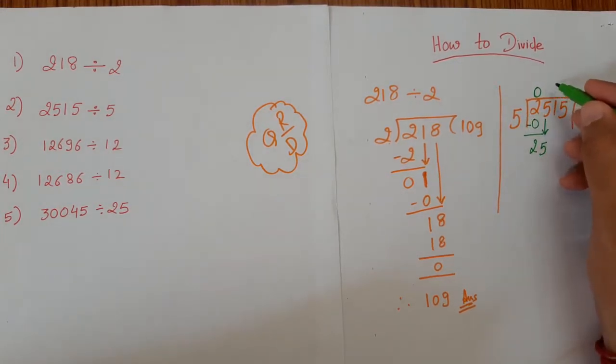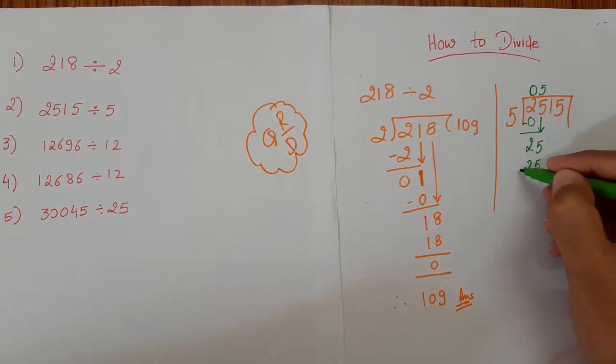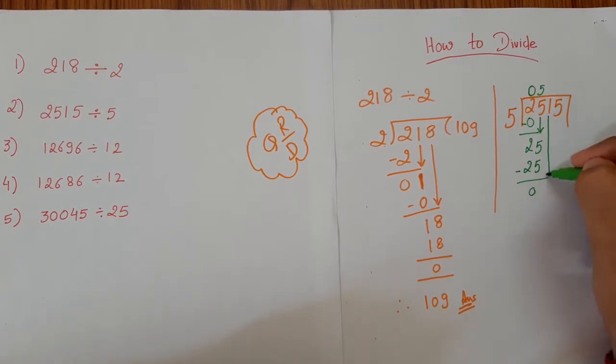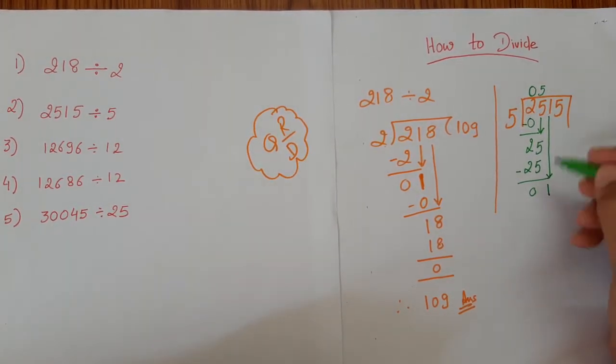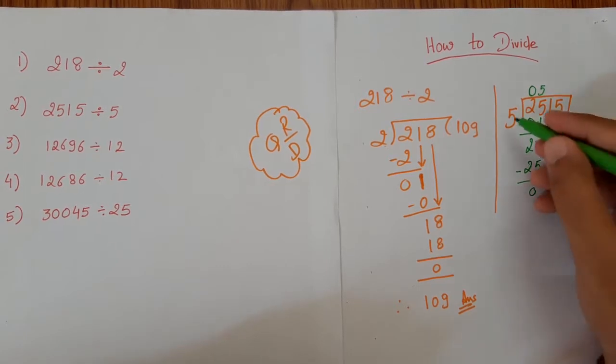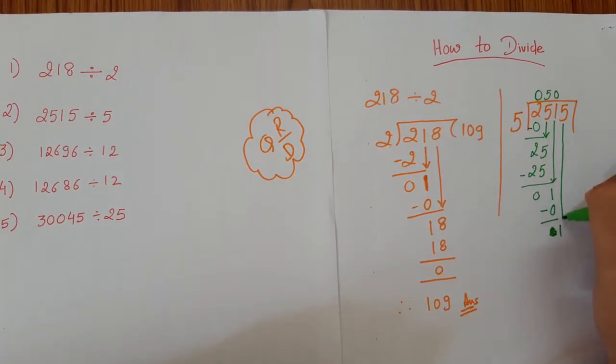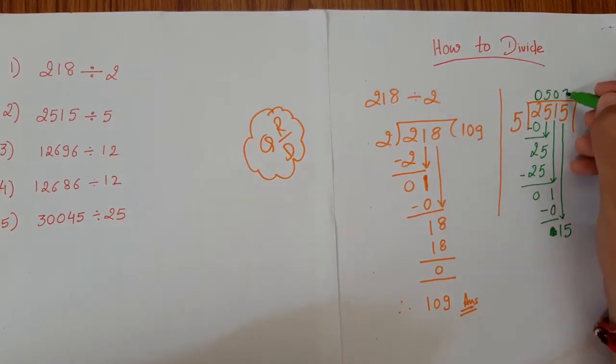So 5 times 5 is 25. We get 0. Again, take down 1. So is it divisible? No. So 5 times 0 is 0. So we get 1. Take it down. We get 15. 5 times 3 is 15. So yes, it is divisible.